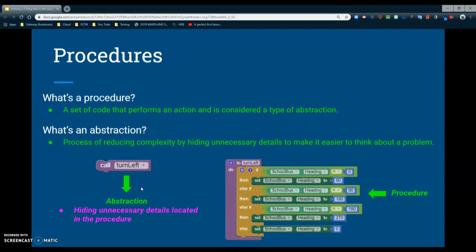Looking at our procedures, this is a quick breakdown of what a procedure may look like and how we are hiding unnecessary code. Remember that a procedure is a set of code that performs an action and is considered a type of abstraction, whereas an abstraction is the process of reducing code and hiding any unnecessary information. Here we have a procedure which is our call turn left, and inside that procedure we have all of this code that we are hiding.